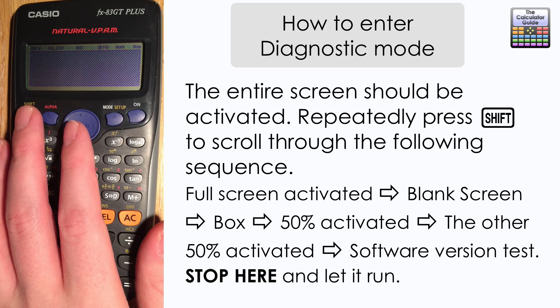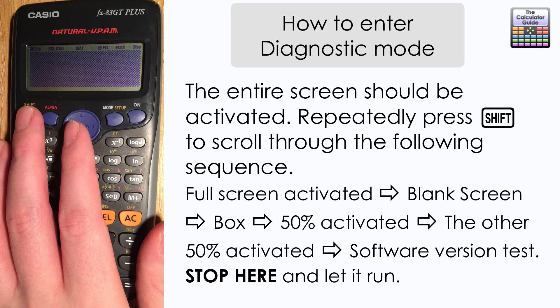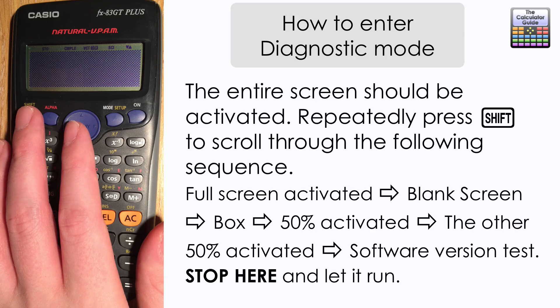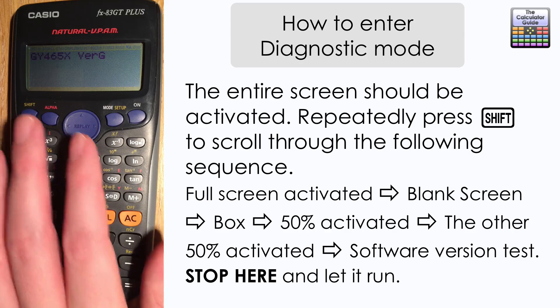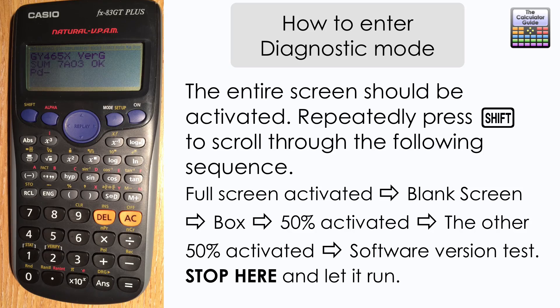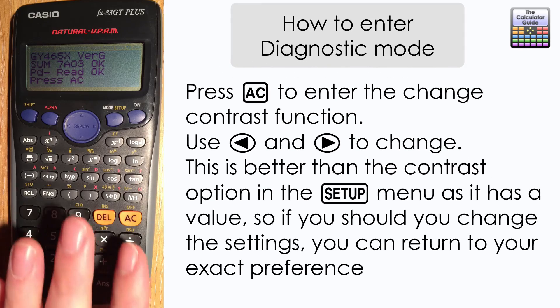Now you can repeatedly press shift to scroll through this particular sequence: from fully activated screen to blank screen to a box, 50% activated, then the other 50% activated, and then finally there'll be a test of the software version. Just stop here a moment until it says press AC.